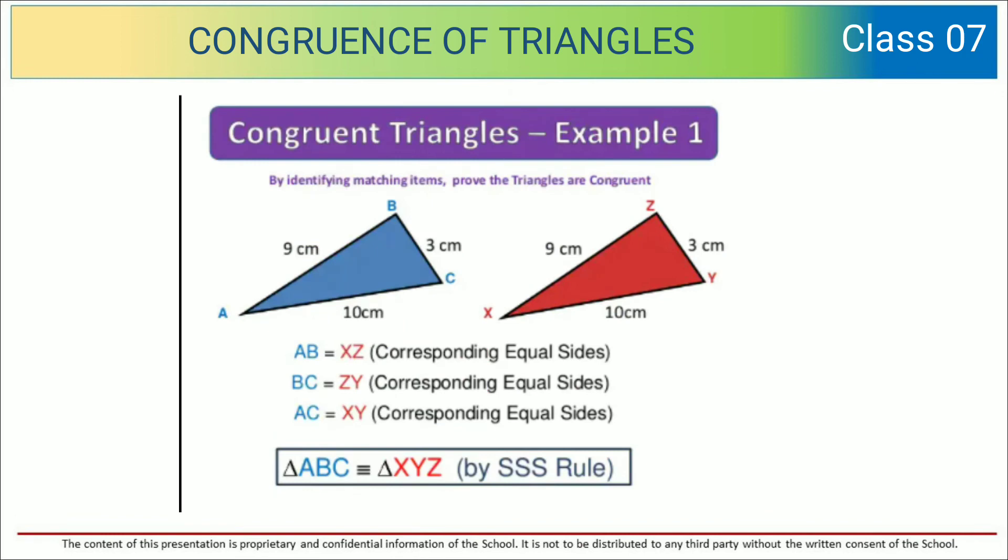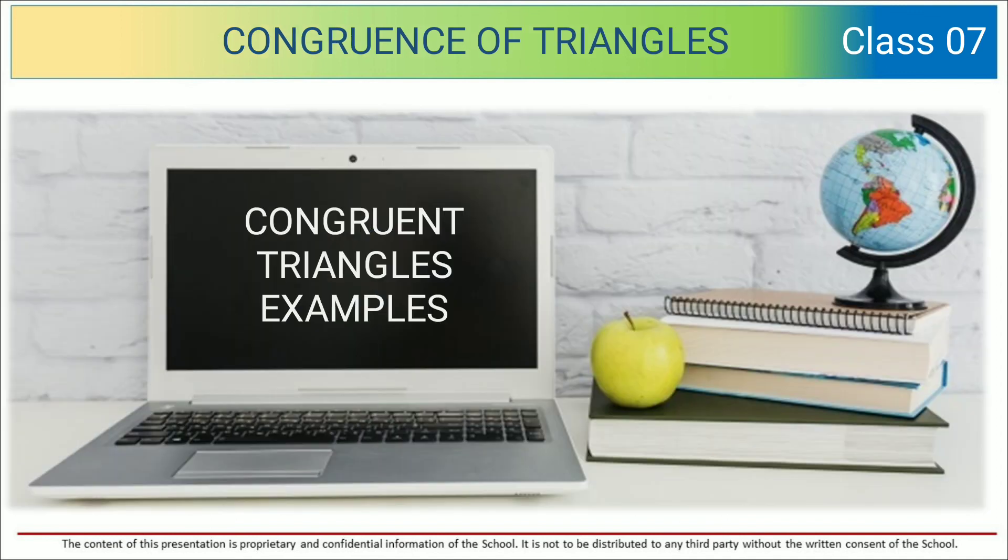Let us see one example related to it. Over here triangle ABC is given and XYZ is given. AC is equal to XY, BC is equal to ZY, and AB is equal to XZ. So triangle ABC is congruent to triangle XYZ by SSS rule.